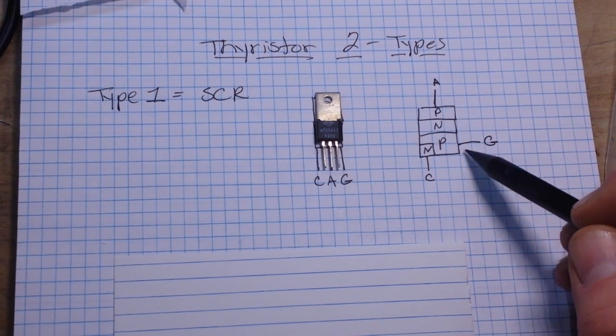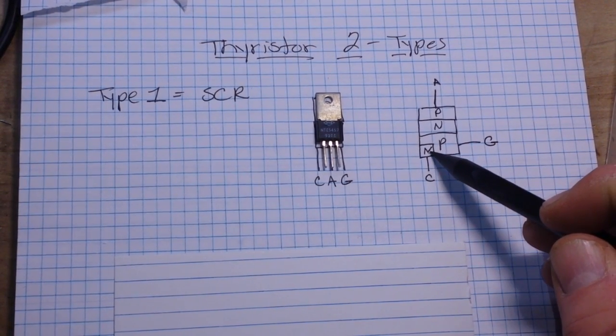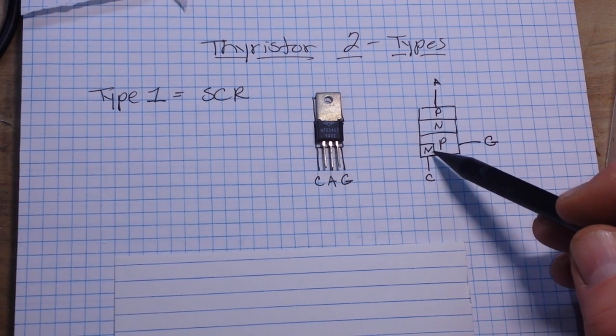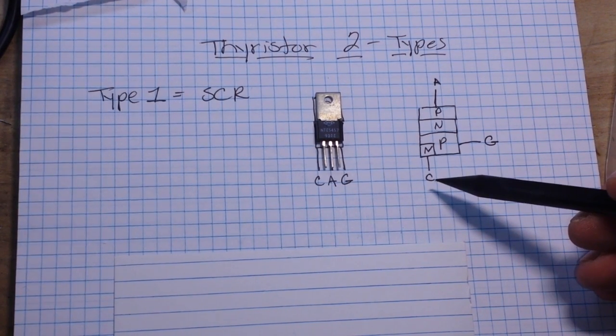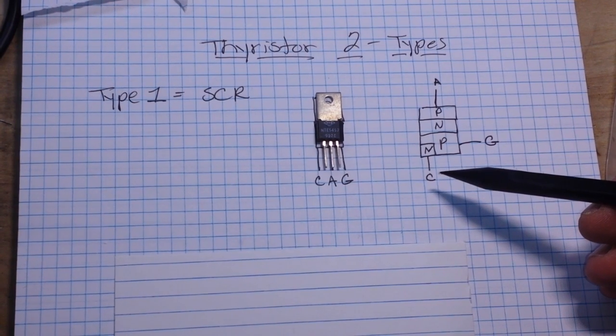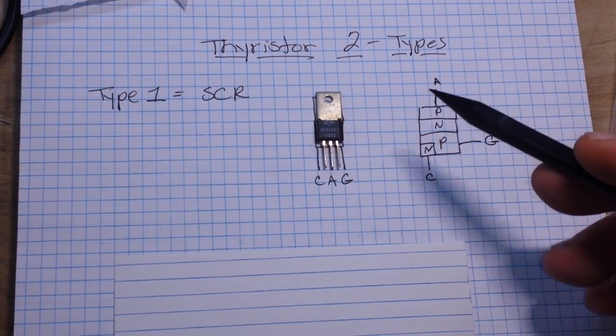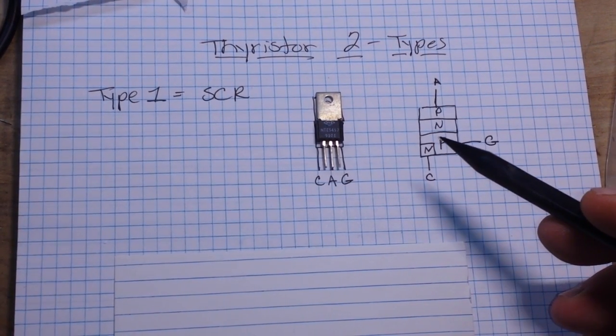We have our gate also going to the P layer, and our N layer, the fourth layer, is going to the cathode. So it's sometimes called a four-layer PNPN diode.